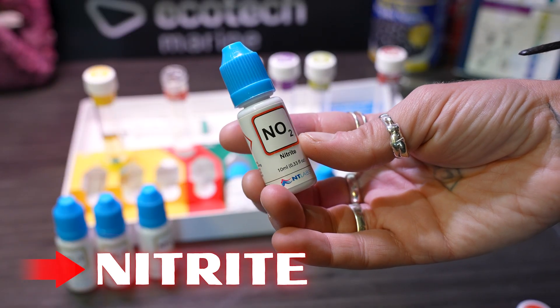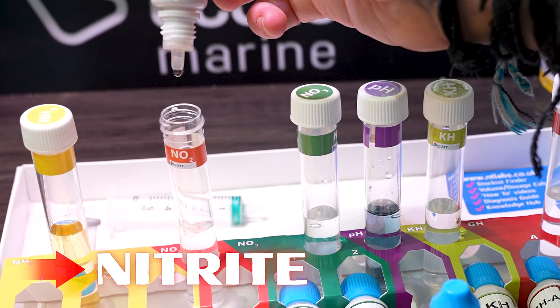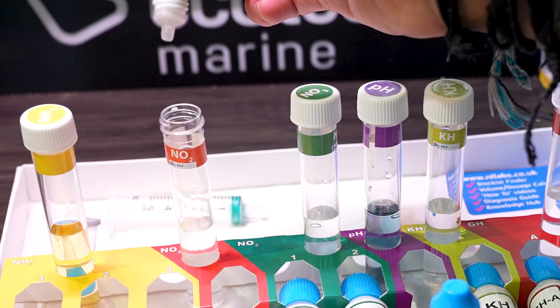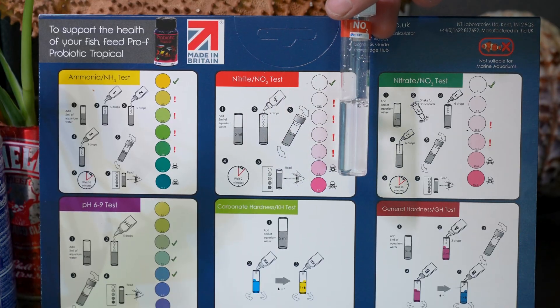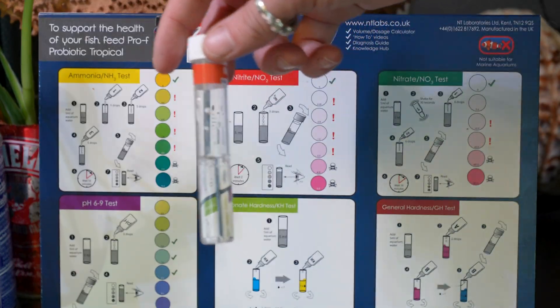So next up, nitrite. Nitrite is produced by the beneficial bacteria in your tank as they break down harmful waste ammonia. Although not as toxic as ammonia, nitrite is still harmful to your fish's health. So far, so good. Let's move on.